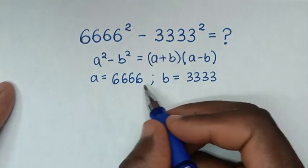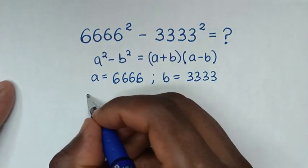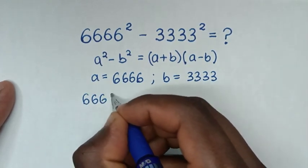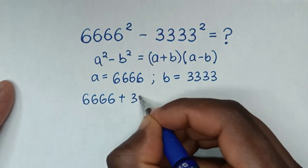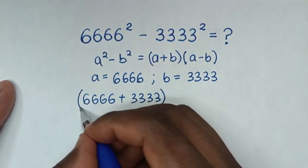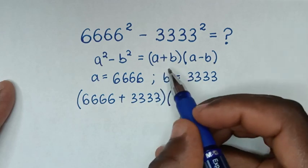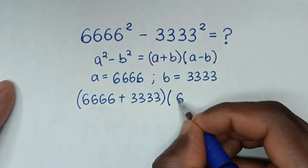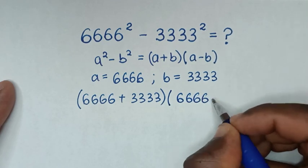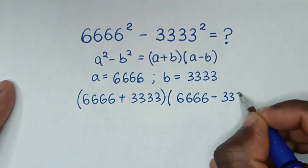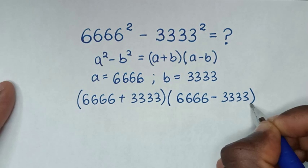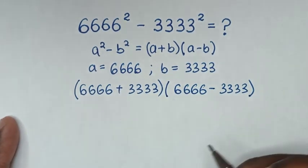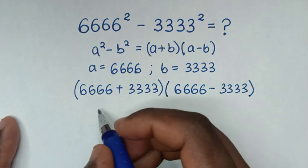We have (a plus b) which is 6,666 plus 3,333, then times (a minus b) which is 6,666 minus 3,333.